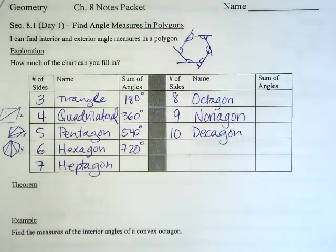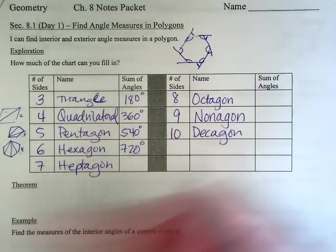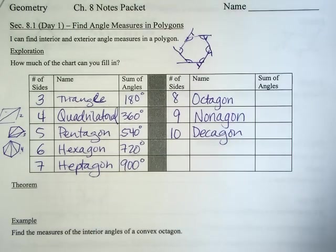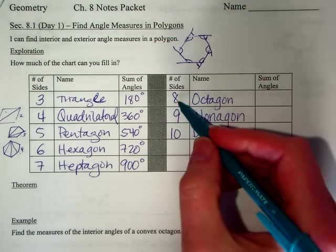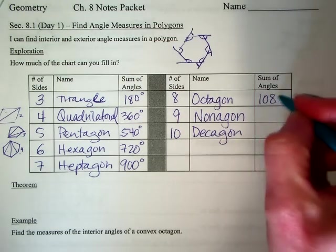And if I take that times 180, I'm going to find out how many degrees are in the whole thing. So seven minus two is five, times 180, gives me 900. Eight minus two, which is six, times 180. And the octagon has 1,080 degrees in it.